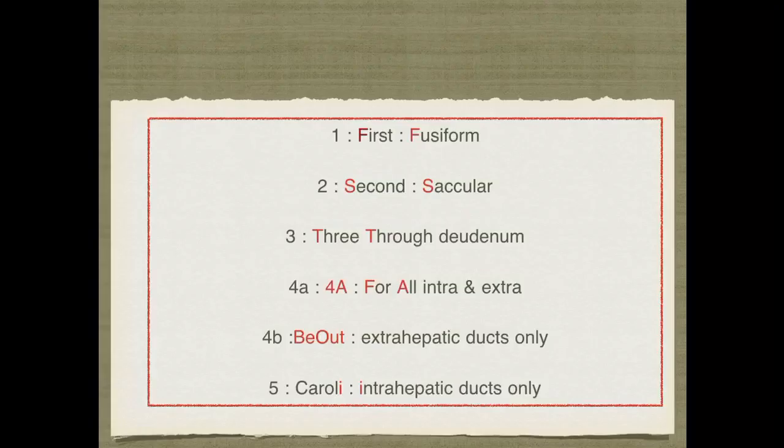I tried to make a mnemonic using letters: type one — 'first' stands for fusiform; type two — 'second' is saccular; type three — 'through' the duodenum; type four A — 'for all,' meaning all intra- and extra-hepatic ducts; type four B — 'B out,' meaning extra-hepatic ducts only; and type five (Caroli) — take the 'i' and say intra-hepatic ducts only. Don't confuse four B with five, since four A already covers all intra- and extra-hepatic.